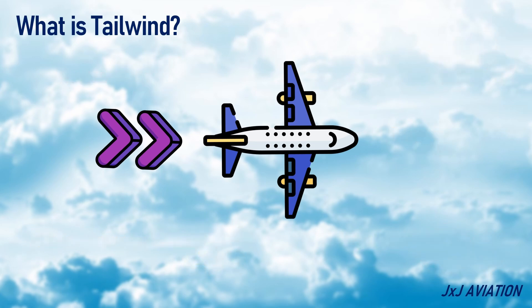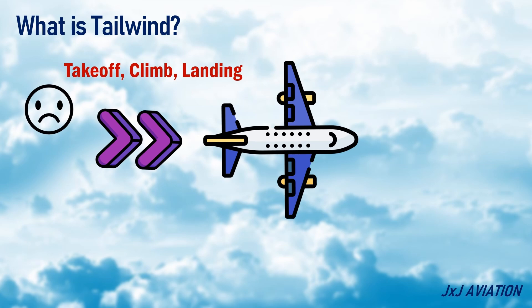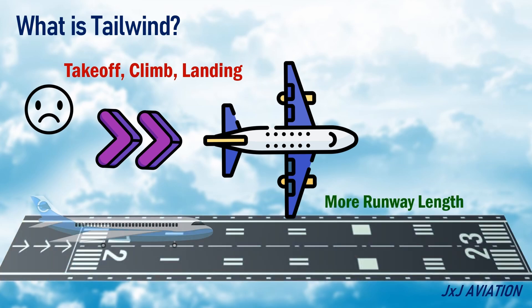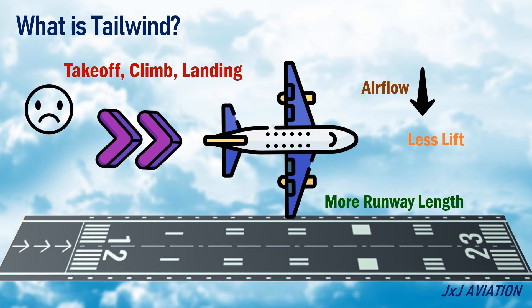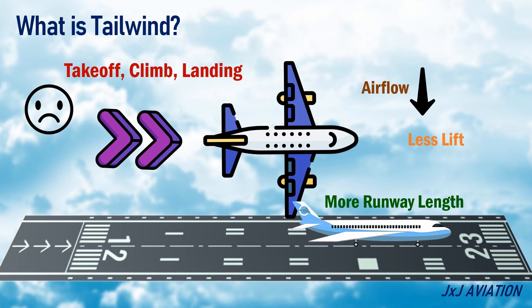Tailwinds are not beneficial in the take-off, climb, or landing phases because they will increase the runway length requirement. This is because during take-off, the airflow over the wings is reduced, hence less lift is generated, so the aircraft needs a longer runway to accelerate to higher speeds. During landing, there is less drag, so more distance is required to decelerate the aircraft.